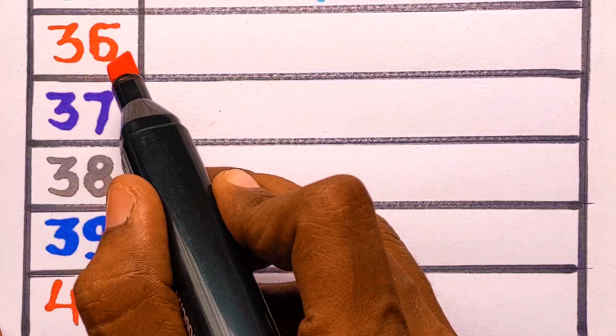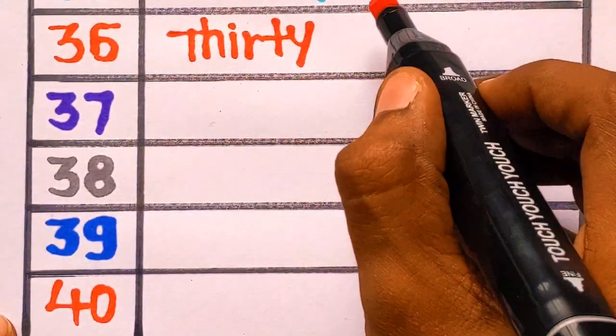Next is 36. T-H-I-R-T-Y, thirty. S-I-X, six. 36, thirty-six with a red color.